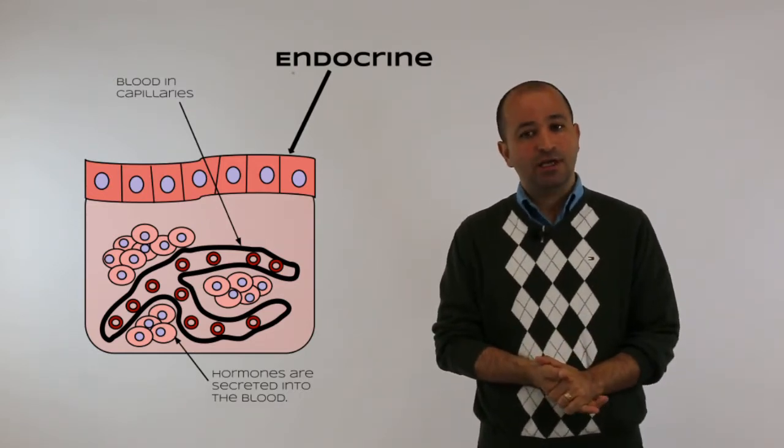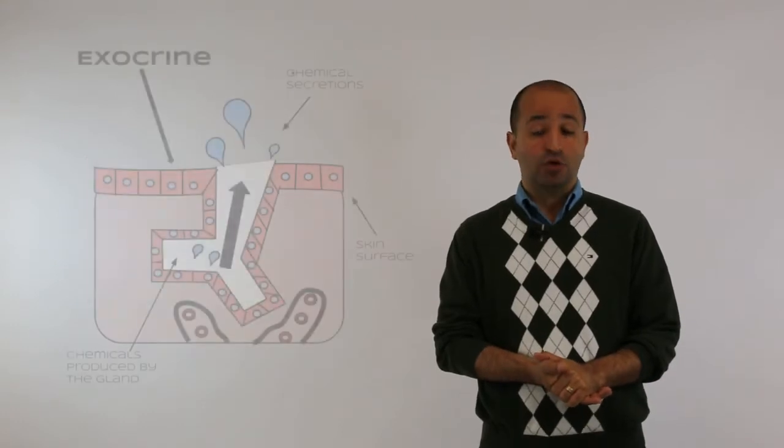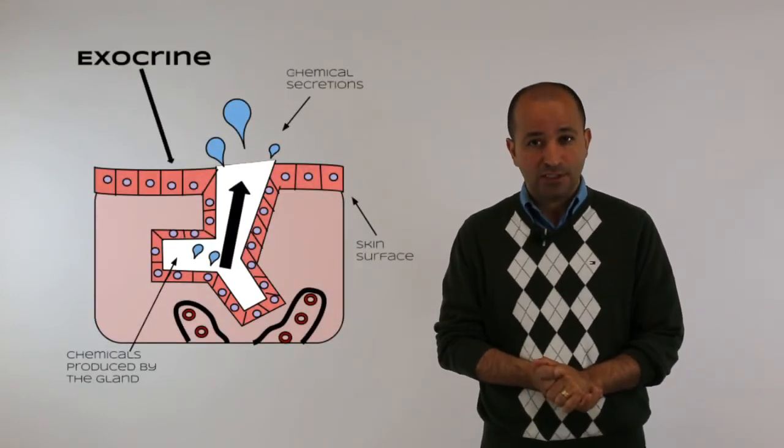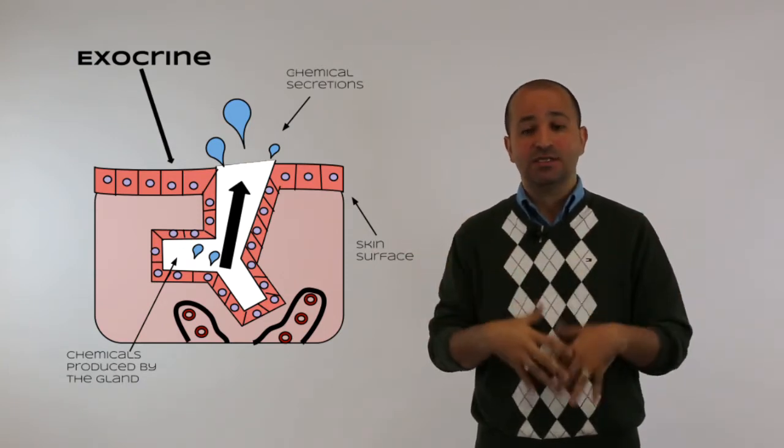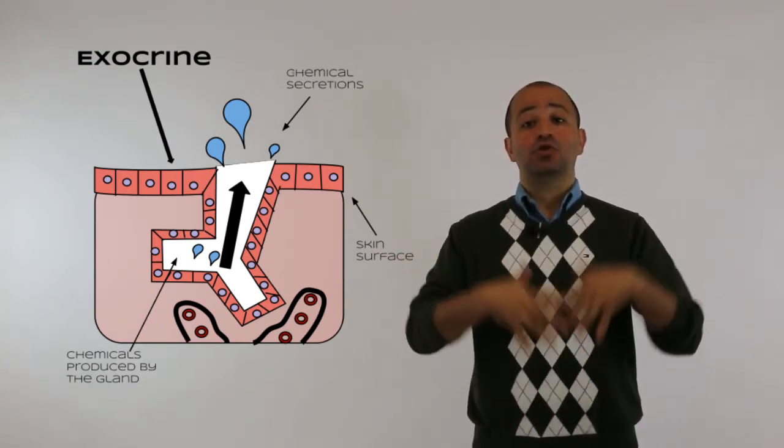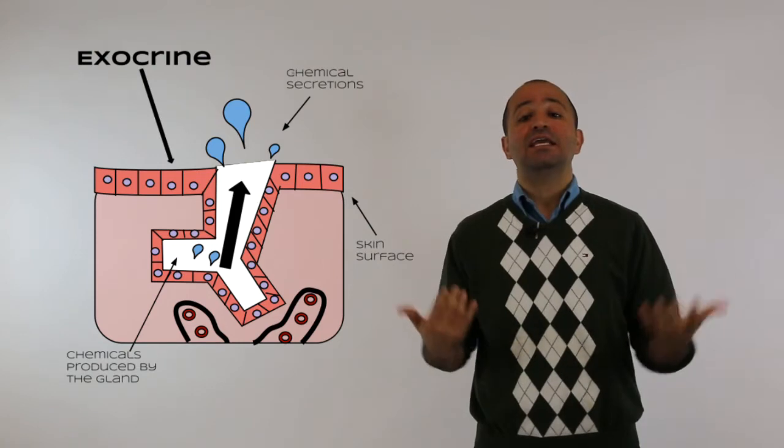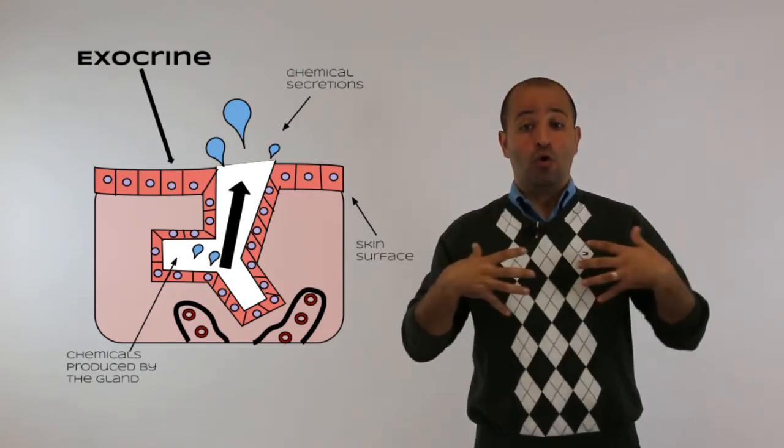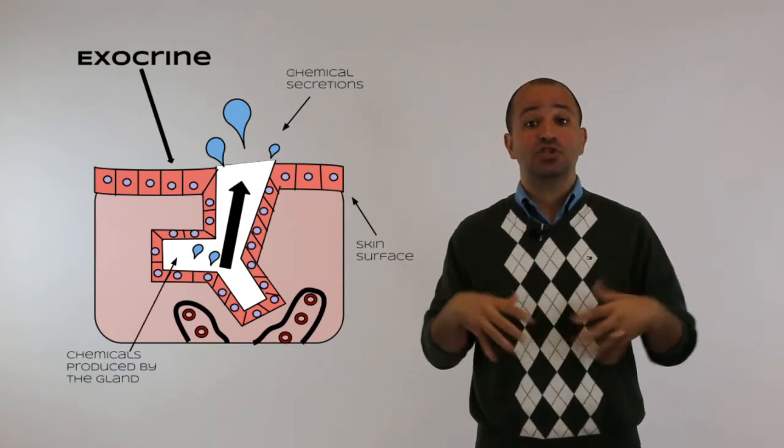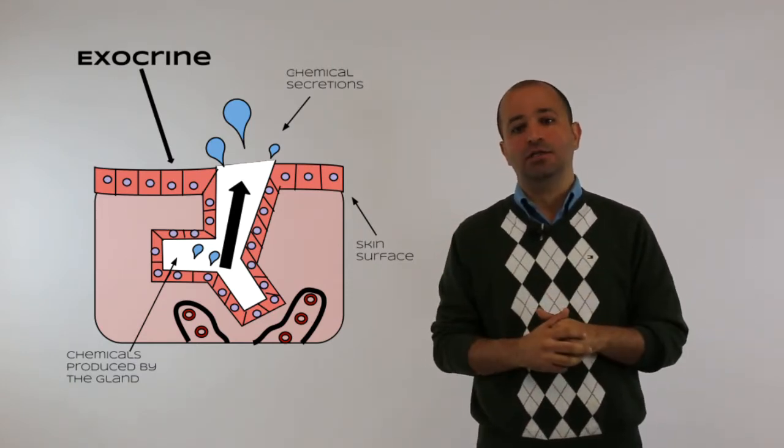Exocrine glands produce their secretions outside, not into the blood. When I say outside, I mean outside the body or inside other organs such as the digestive system or respiratory system, which is considered outside the body.